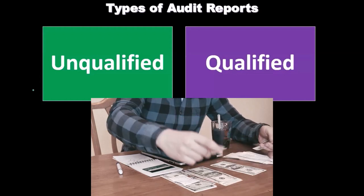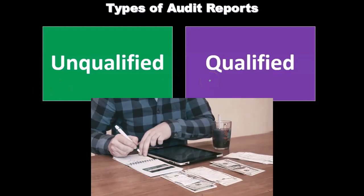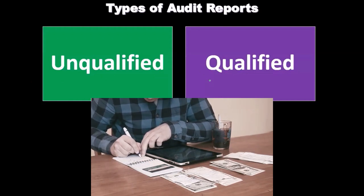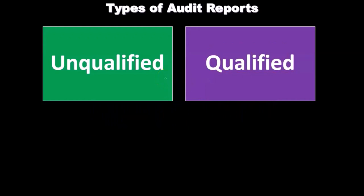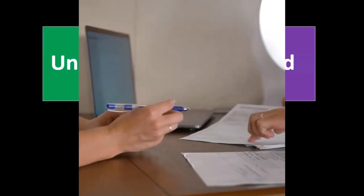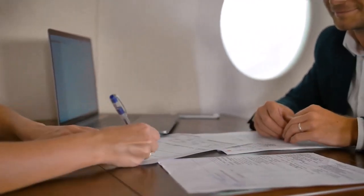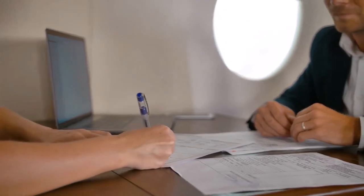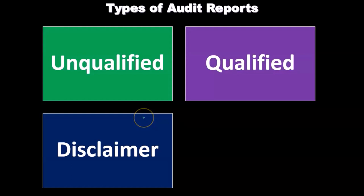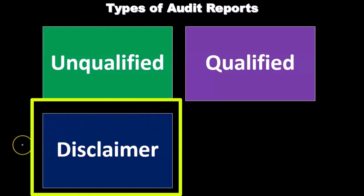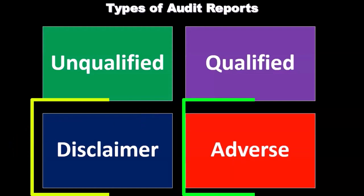With no qualifications, the unqualified is the highest report. A qualified report is the next step down — we still issue a report, it's not a terrible report, though a qualified report is a significant step down from an unqualified. We basically state the qualification or deviation, and that's our qualification from the standard. Then we have a disclaimer type of report, where we disclaim from giving the opinion, and then we have the adverse report.